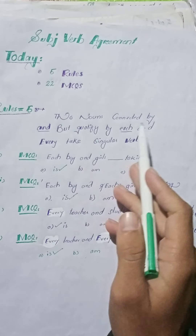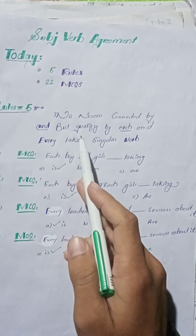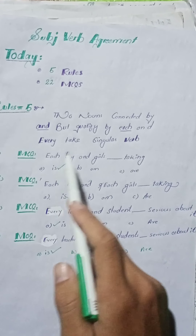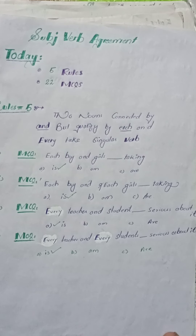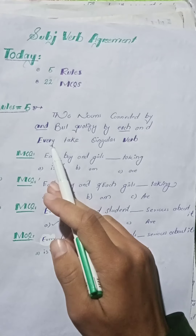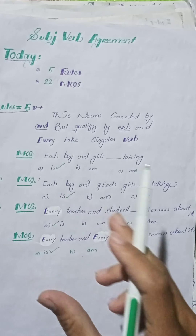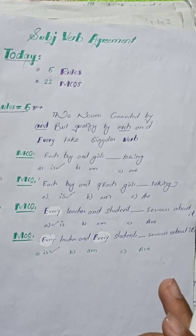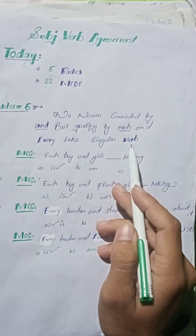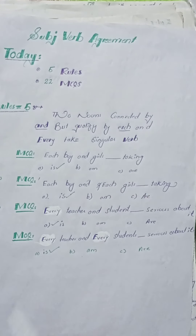Rule number five: two nouns connected by 'and' but qualified by 'each' or 'every' take a singular verb. اگر دو nouns کو 'and' کے ذریعے connect کیا گیا ہو لیکن ان سے پہلے یا بعد میں 'each' یا 'every' آئے، تو ہمیشہ singular form of verb use کرنا ہے۔